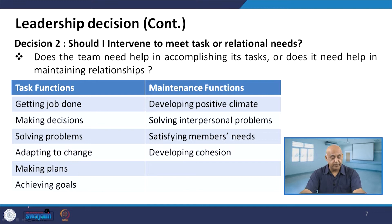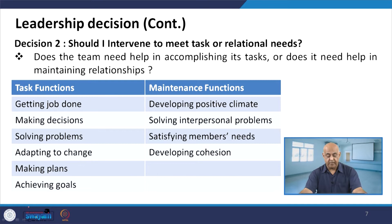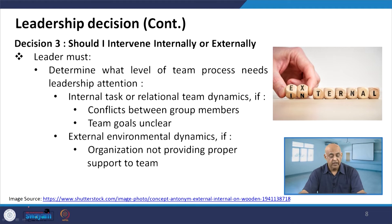Should I intervene on the task or relational needs? This involves helping maintain relationships, getting the job done, making decisions, solving problems, adapting to change, making plans and achieving goals — these are task functions. But there are also certain maintenance functions: developing a positive climate, solving interpersonal problems, satisfying member needs and developing cohesion.